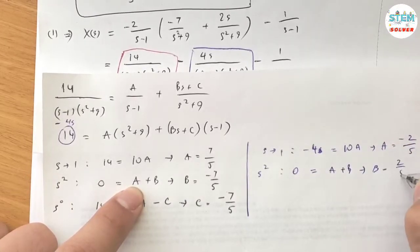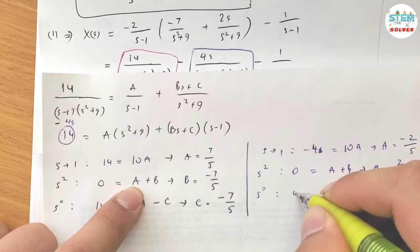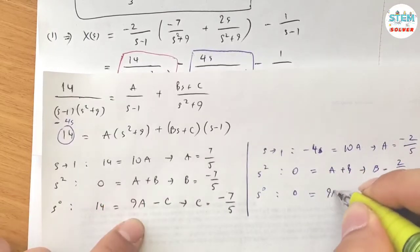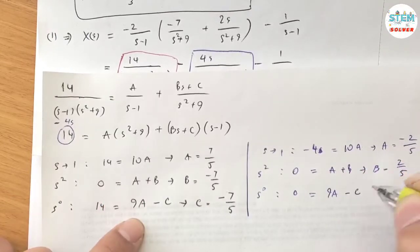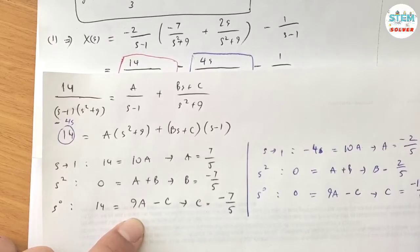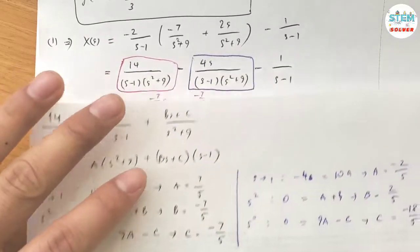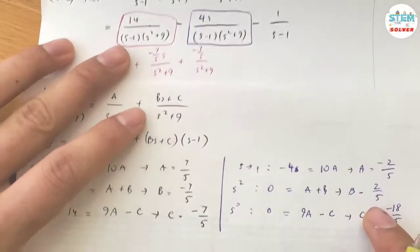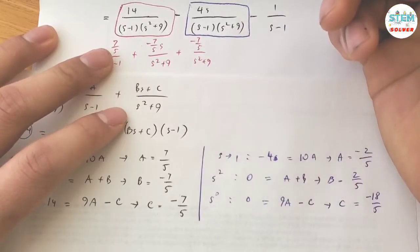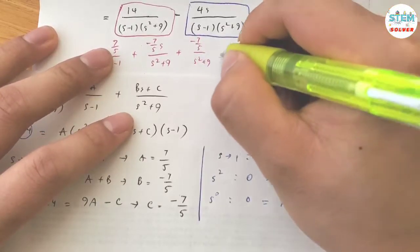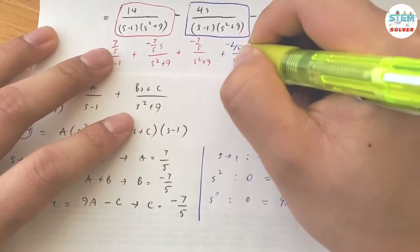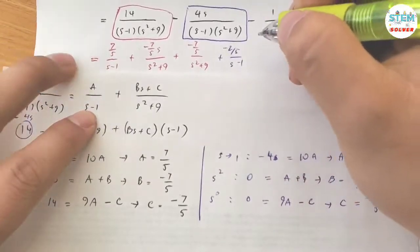Solving for the coefficients: A plus B gives B equals 2/5 when s equals 0. From 9A minus C, we get C equals negative 18/5. Plugging these back in, we have A over (s minus 1) plus B times s over (s squared plus 9), where B is 2/5, plus C which is negative 18/5 over (s squared plus 9).